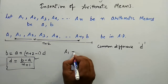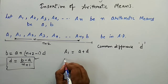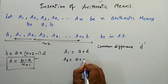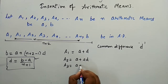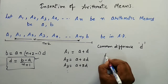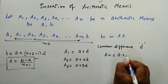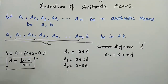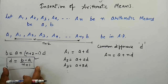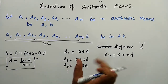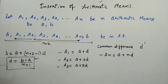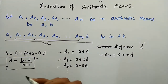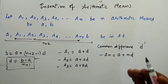Now a1 would be equal to a plus d, a2 would be equal to a plus 2d, a3 would be equal to a plus 3d, and an would be equal to a plus nd. So you first calculate the common difference, then calculate the arithmetic means using these equations. This is the way for inserting n arithmetic means between two given numbers.